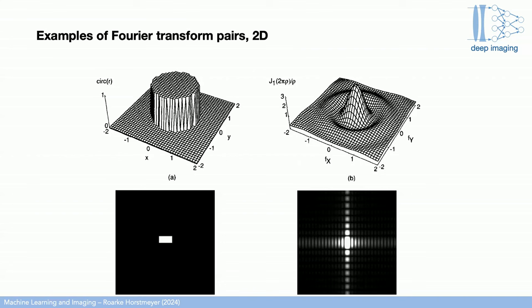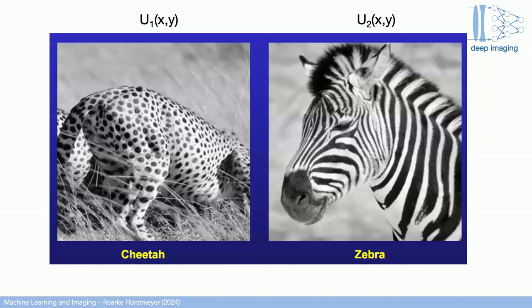So again, this is a separable scenario. This 2D function can be described by two separate 1D functions, taking their outer product effectively. And so the same thing is true with the Fourier transform.